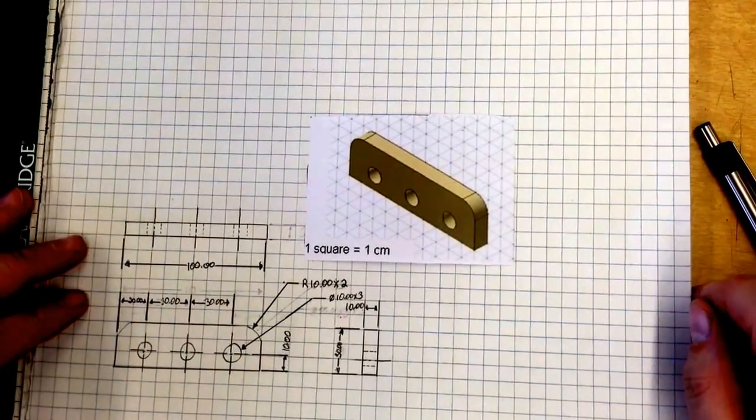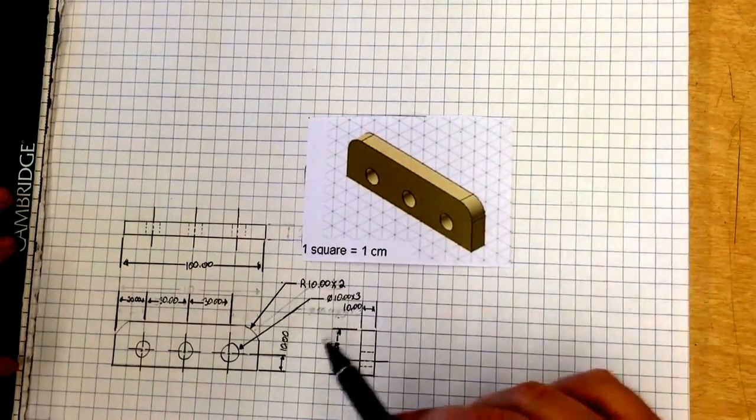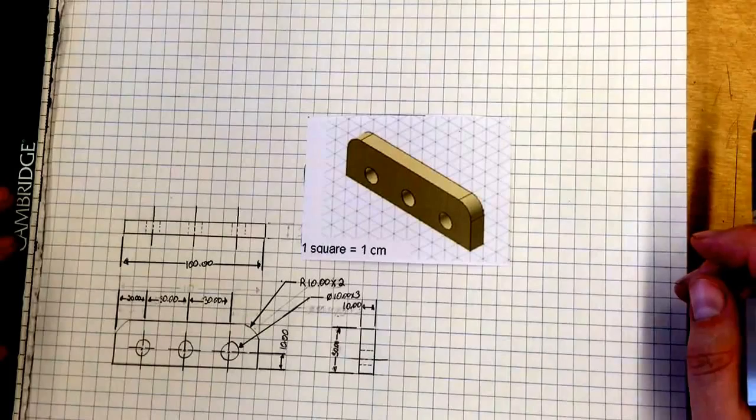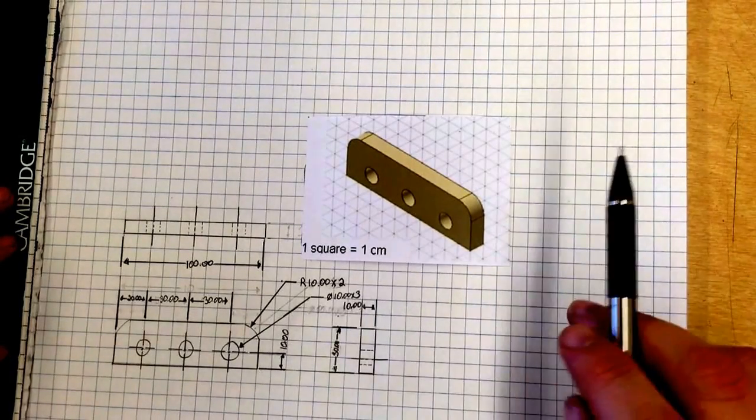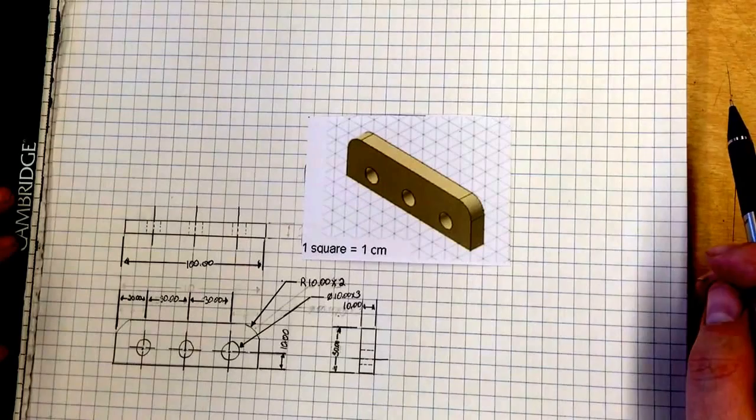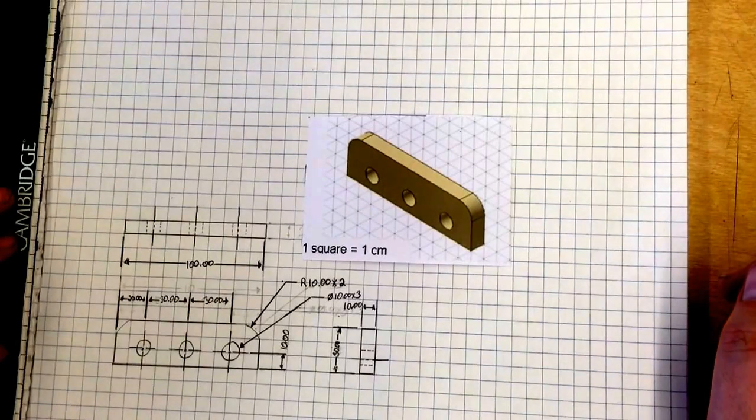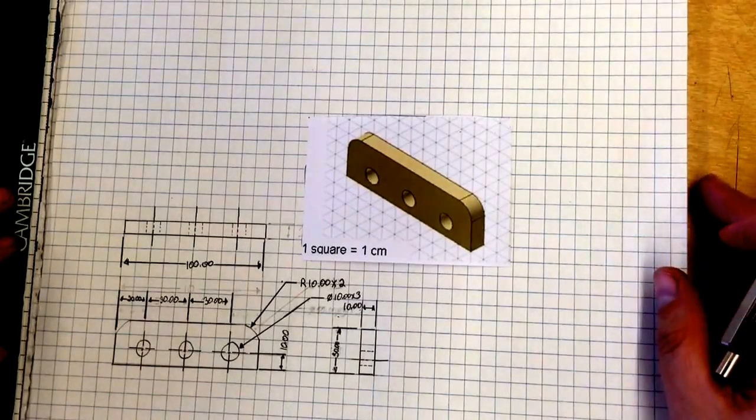We are going to spend a little bit of time right now on dimensioning this object. Now if you just need to see what the object looks like when it's dimensioned, go ahead and stop the video right now and you can actually just zoom in and see it. If you need to see how this all goes down, well, follow along.